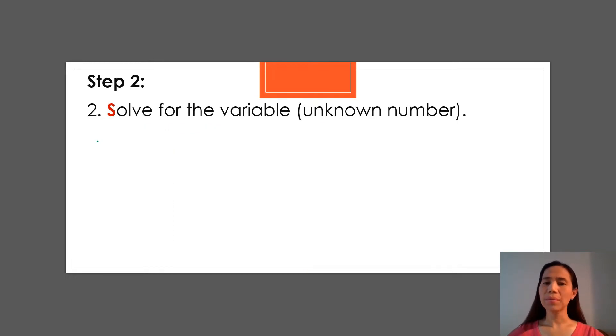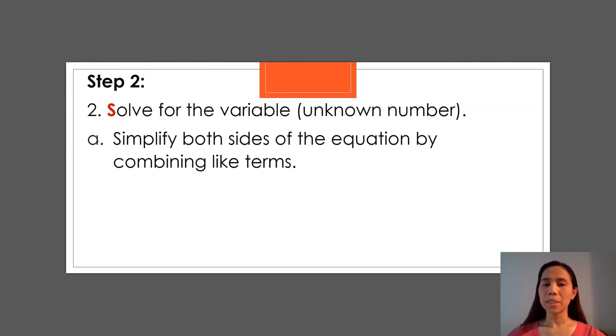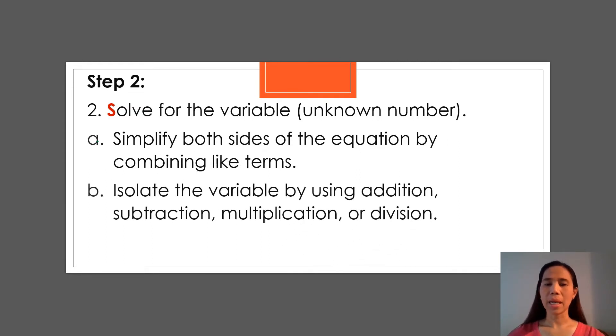Second, we have to solve for the variable or the unknown number. So let's try. First, we have to simplify both sides of the equation by combining like terms. And second, we have to isolate the variable by using addition, subtraction, multiplication, or division. So let's practice.